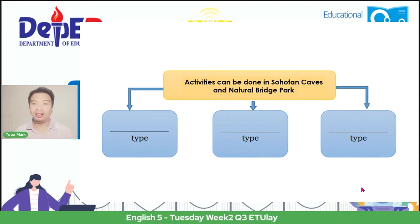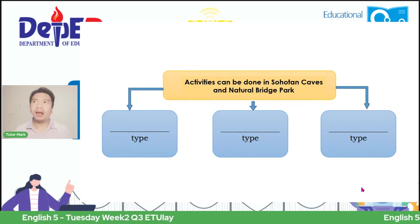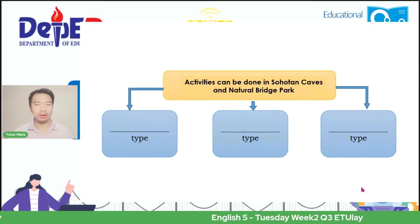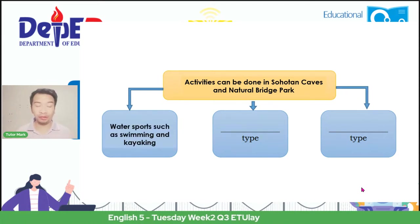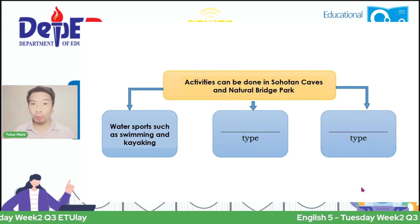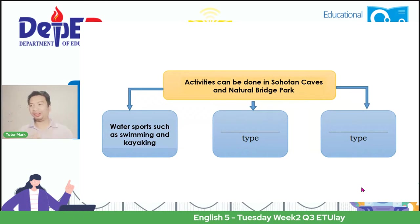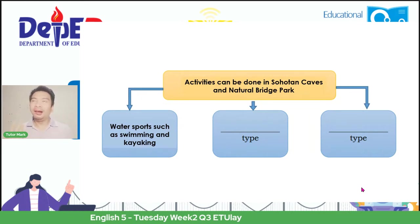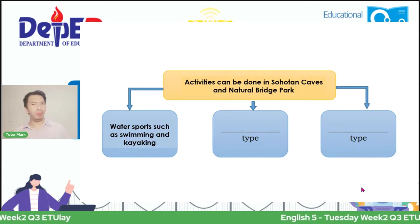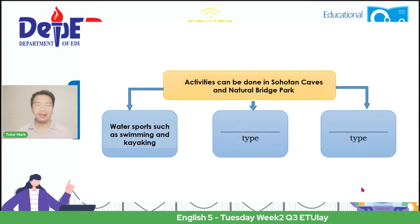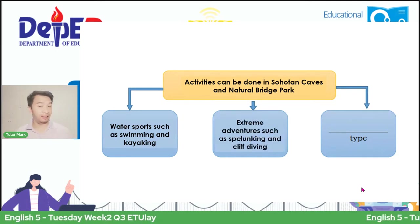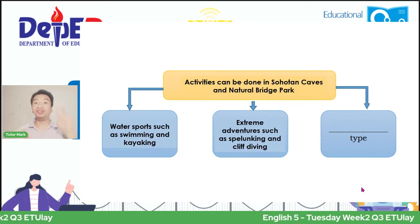Now there are different types of activities there. The first type is associated with water sports, such as swimming and kayaking. Now I use my own words: 'water sports.' Do you remember the terms spelunking and cliff diving? What kind of activity are they? If your answer is 'extreme adventures such as spelunking and cliff diving,' then you are correct. You now have the second concept.